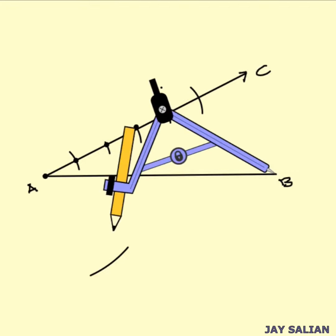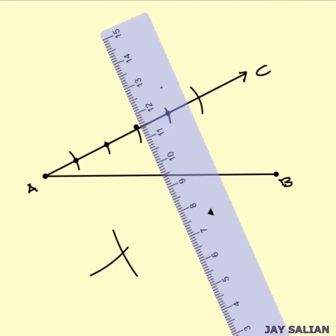Step 4: Finding the intersection point. The intersection of the arcs from A and B determines point D.